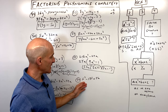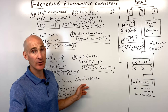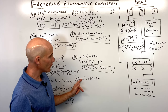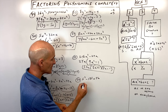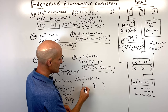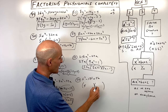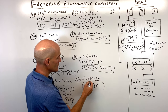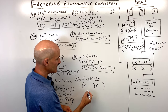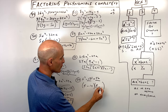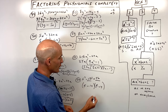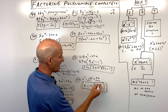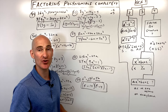Number fifty-six is a trinomial with leading coefficient 1. What multiplies to positive 56 but adds to negative 18? That's negative 14 and negative 4. Check by foiling to get back to the original polynomial.